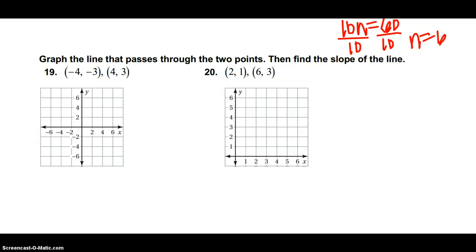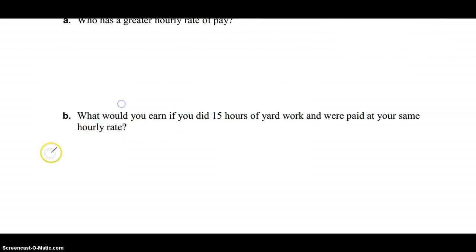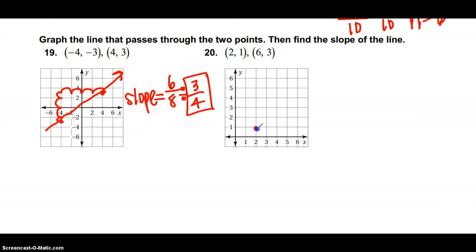19 and 20, we have to graph the line that passes through the points and then find the slope. So negative 4 negative 3 is negative 4, negative 3 would be right about there. Keep in mind it's between negative 2 and negative 4, and then 4, 3 is here. So I'm rising a half and then 1 and a half, 2 and a half, 3, and then running 1, 2, 3, 4. So my slope here, really we're counting by 2 so it's 6 over 8 instead of 3 over 4, but then I simplify it and your slope ends up being 3 4ths. Next points you have to graph for 2, 1 which is right here in 6, 3. We rise 1, 2, we run 1, 2, 3, 4, so my slope is rise over run. So I rose 2 and I ran 4 which simplifies to 1 half.